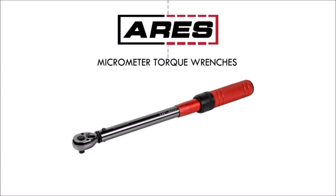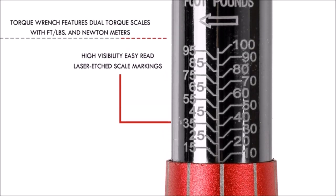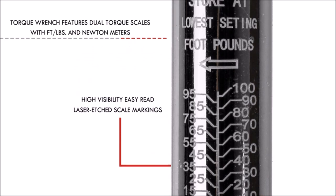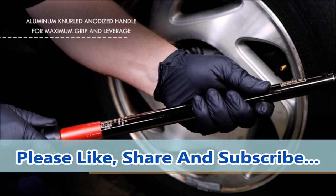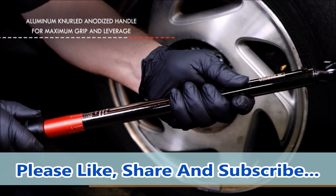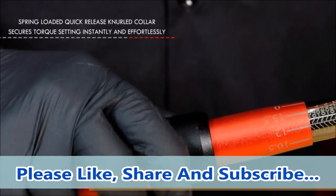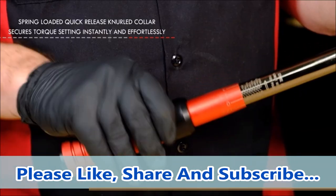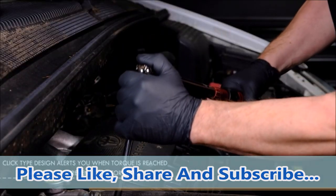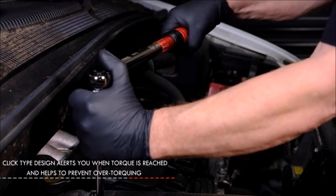The Ares a quarter inch drive micrometer torque wrench features dual torque scales with inch pounds and newton meters readings and ranges of 40 to 200 inch pounds and 4.52 to 22.6 newton meters with an accuracy tolerance of plus or minus 3%. The ultra smooth handle rotation with high visibility laser etched markings makes it easy to adjust your specified torque.